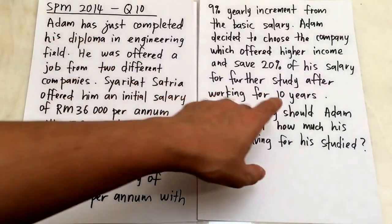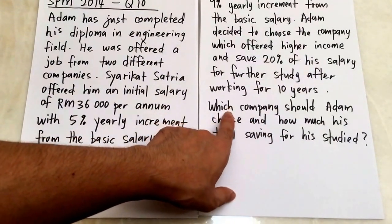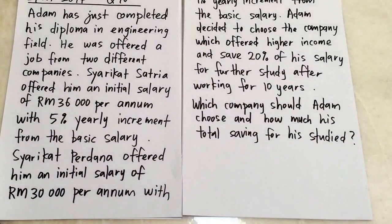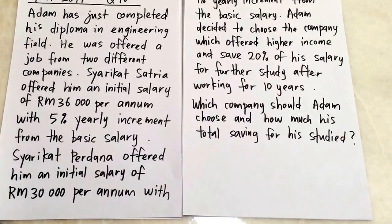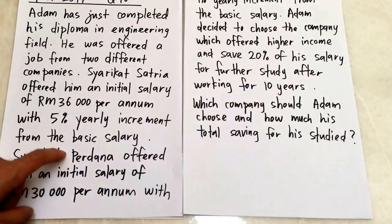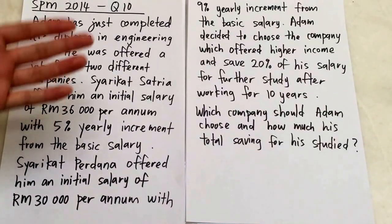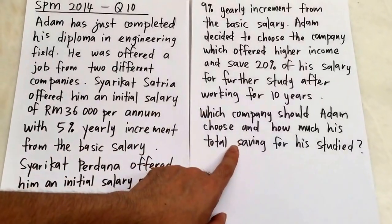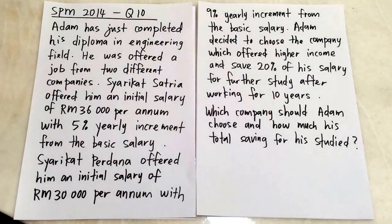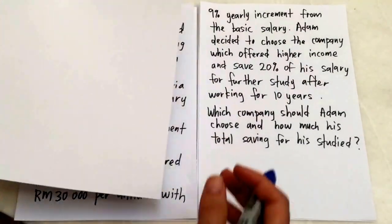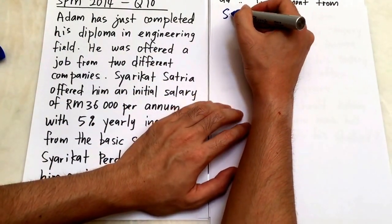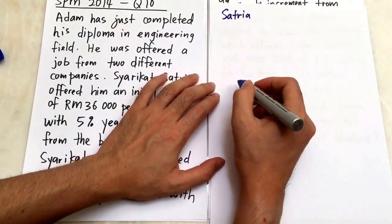Which company should Adam choose and how much is the total saving for his study? This is quite simple if you understand. I'm going to work out the total salary Adam will get after 10 years for the first company and the second company. After that, I will choose the highest one, then multiply by 20% to find out the total saving for Adam.